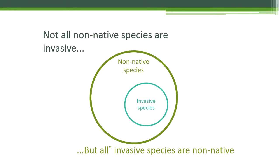Sometimes, differentiating between non-native and invasive species can be difficult, but a diagram can make it easy. The larger green circle represents non-native species, and the smaller blue circle represents invasive species. Notice that there is space where the circles don't overlap. That space represents species that are non-native, but not invasive.